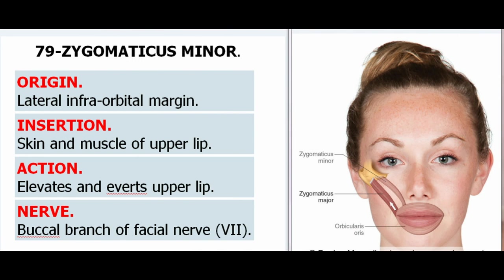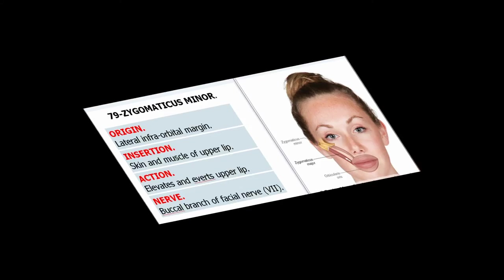79. Zygomaticus Minor. Origin: Lateral infraorbital margin. Insertion: Skin and muscle of upper lip. Action: Elevates and everts upper lip. Nerve: Buccal branch of facial nerve (VII).